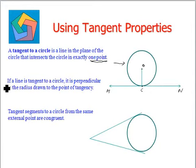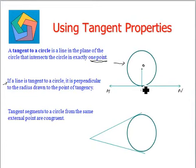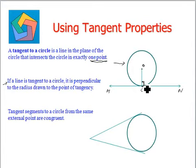If a line is tangent to a circle, it is perpendicular to the radius drawn at the point of tangency. Now MN is a tangent and C is the point of tangency — that is, the point at which it touches the circle. The radius is perpendicular to the tangent, meaning this angle over here is 90 degrees. So this is one of the properties.